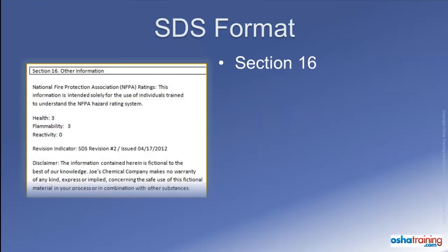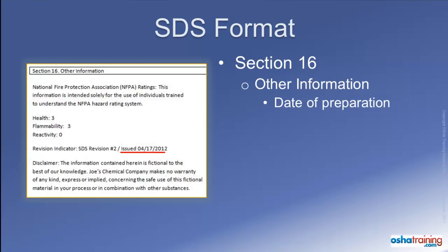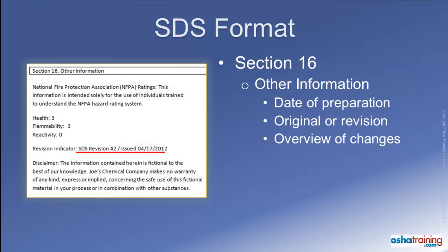Section 16 of safety data sheets, titled Other Information, lists details such as the date the safety data sheet was prepared, whether this is the original version issued or a revised version, and in some cases an overview of any changes that were made during the last revision. The manufacturer or distributor may also choose to put other information about their product in this section, as well as any applicable disclaimers.